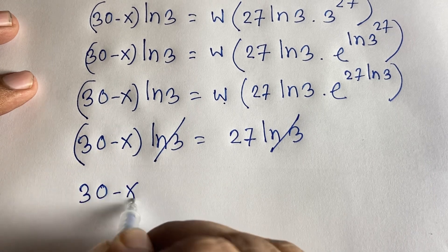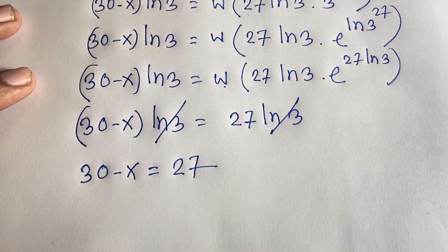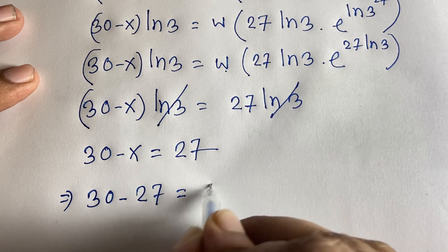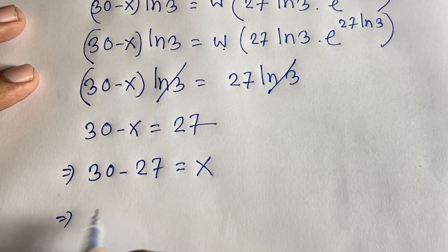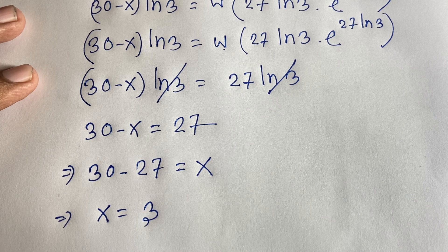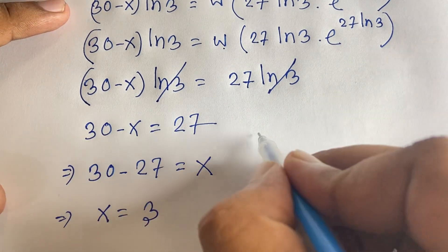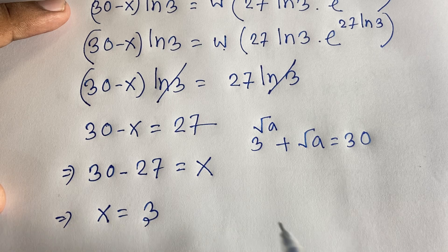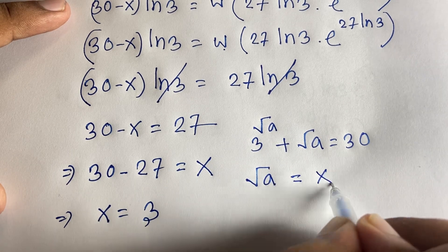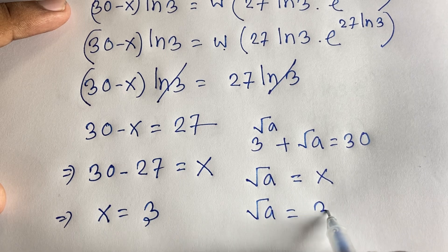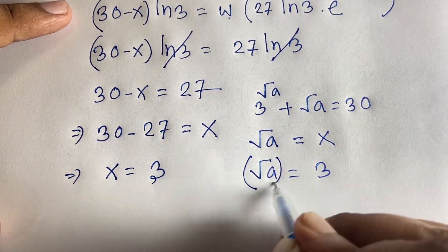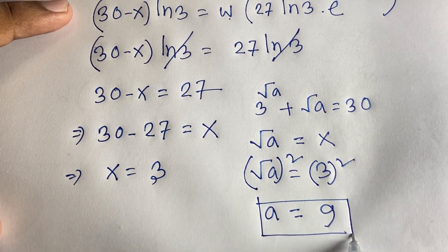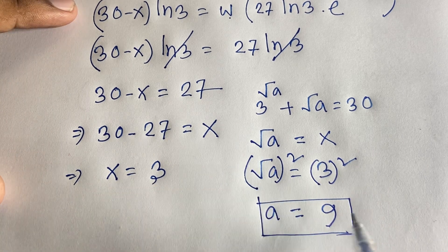Therefore 30 minus 27 equals x, so x equals 3. But recall we let square root of a equal x, so square root of a equals 3. Squaring both sides gives a equals 9. This is our final answer.